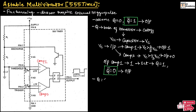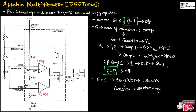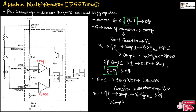Now, since Q is equal to 1, the transistor will turn on. Once the transistor turns on, the capacitor starts discharging. Hence the voltage across the capacitor VC will reduce. Since VC is input to both comparators, the input across comparator 1 will be VC less than 2/3 VCC, so the output of comparator 1 will be 0.